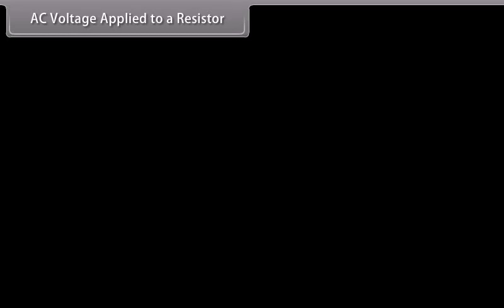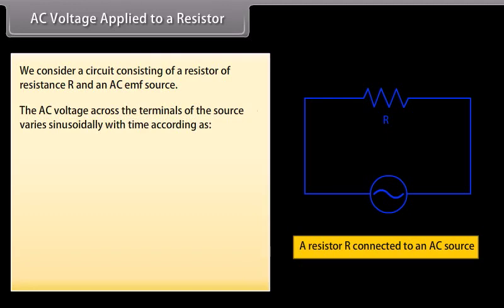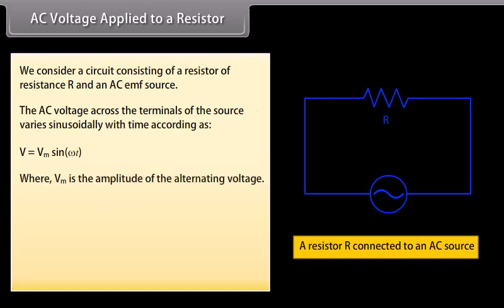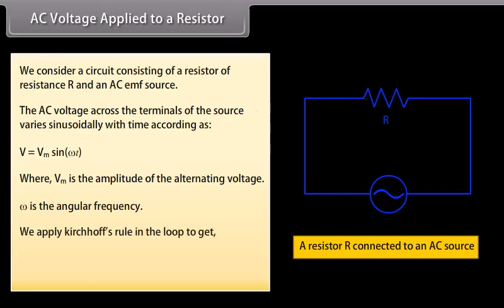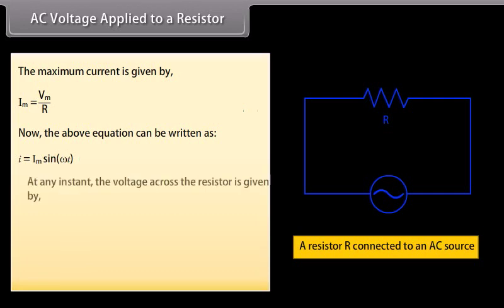AC voltage applied to a resistor: we consider a circuit consisting of a resistor of resistance R and an AC EMF source. The AC voltage varies sinusoidally as V = Vm sin(ωt), where Vm is the amplitude of the alternating voltage and ω is the angular frequency. Applying Kirchhoff's rule, we get I = (Vm/R) × sin(ωt), with maximum current Im = Vm/R, so I = Im sin(ωt).